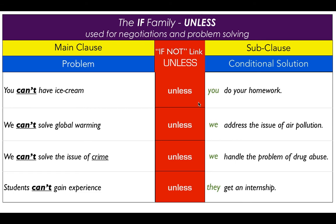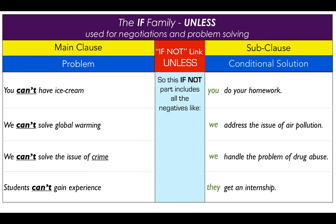So as you can see, this IF NOT part in the middle can include all negatives — like won't, didn't, can't, couldn't, shouldn't, wouldn't, haven't, hasn't, aren't, isn't, doesn't, don't — as examples.